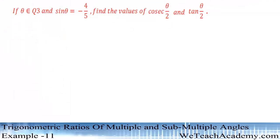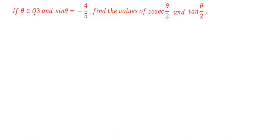Welcome to Vteach Academy. In this section we are going to discuss an example. The given example is: if theta belongs to quadrant 3 and sin theta is equal to minus 4 by 5, then find the values of cosecant theta by 2 and tan theta by 2.